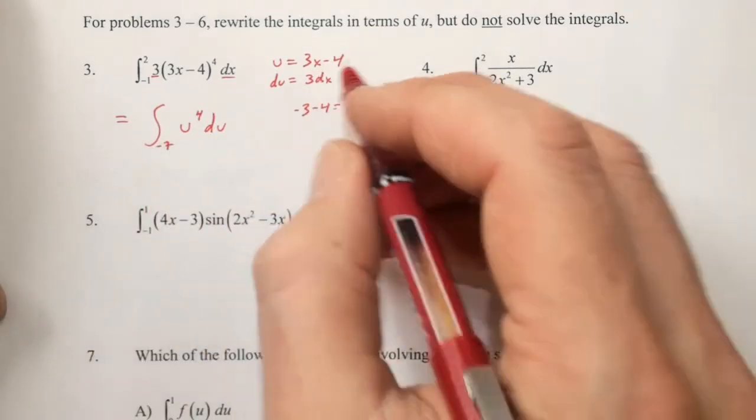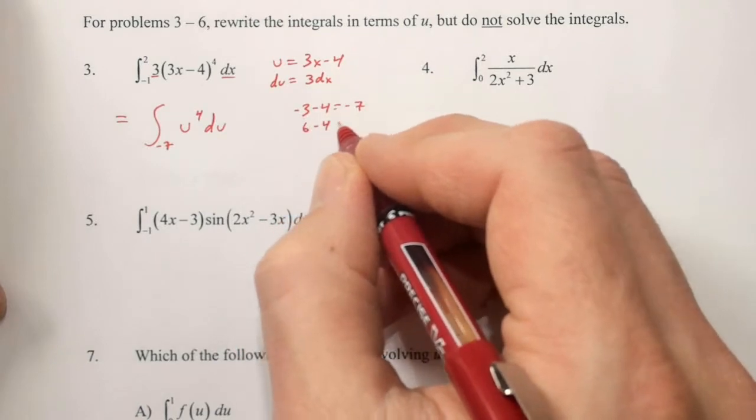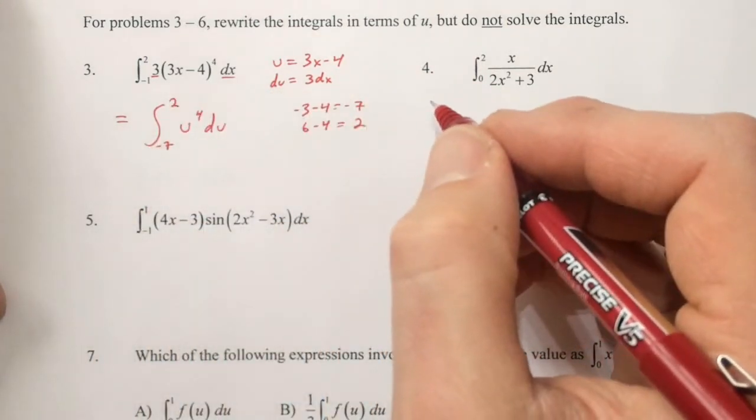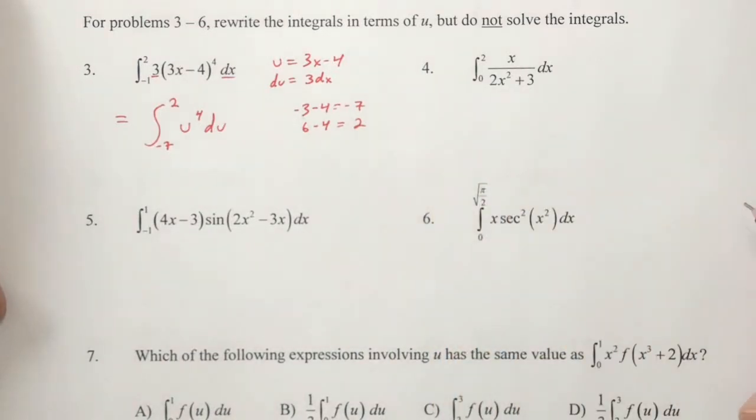When you plug 2 into our equation, we have 6 minus 4, or 2. The integral from negative 7 to 2 of u to the 4th du.